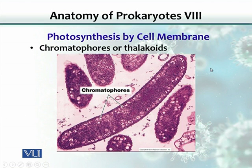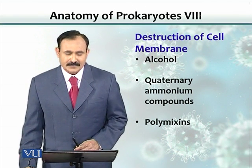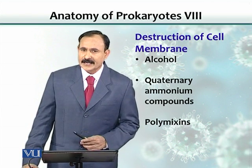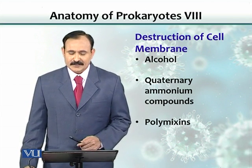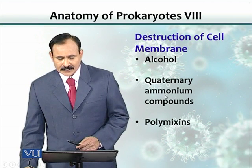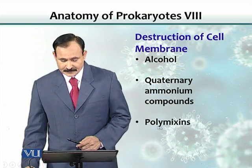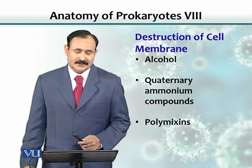The cell membrane performs many functions, including photosynthesis. The components responsible for photosynthesis in the cell membrane are called chromatophores or thylakoids in plants and other protists. The cell membrane, like the cell wall, can be destroyed by chemicals. Alcohol — used in hand sanitizers and antiseptics — disrupts the cell membrane, and if the membrane is broken, the cell is gone. Similarly, quaternary ammonium compounds, used as antiseptics, and polymyxin, an antibiotic, also disrupt and destroy the cell membrane.